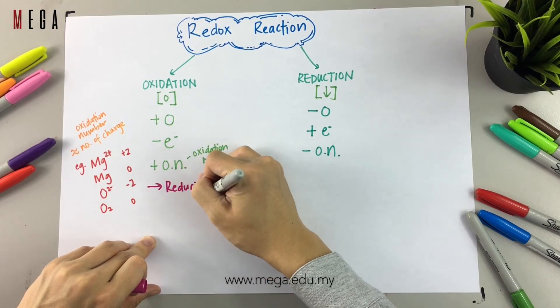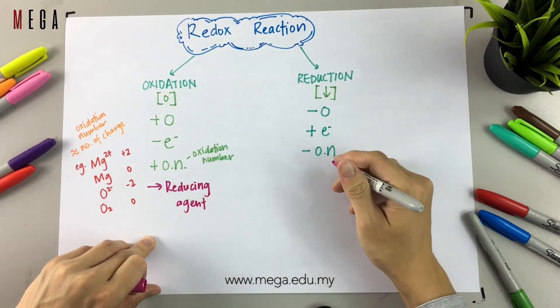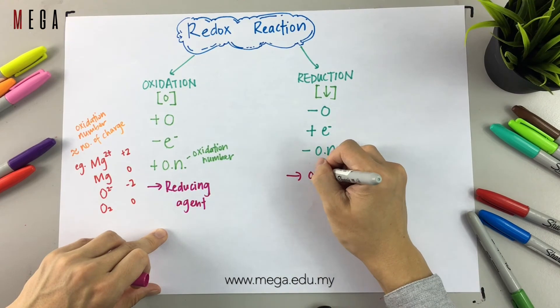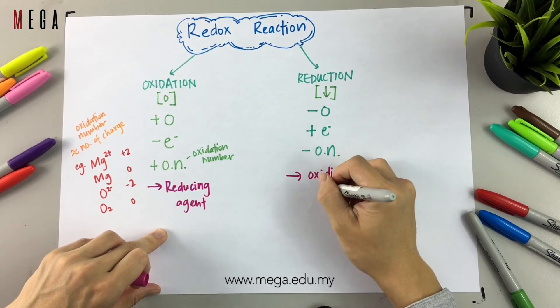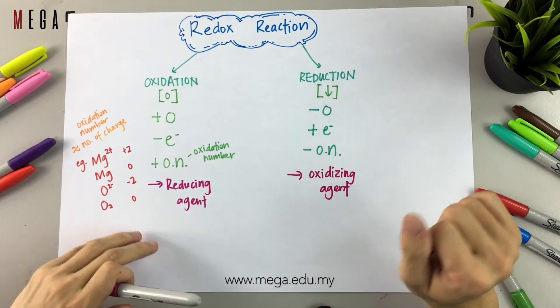The compound that undergoes oxidation is called the reducing agent. The compound that undergoes reduction is called the oxidizing agent. Thank you.